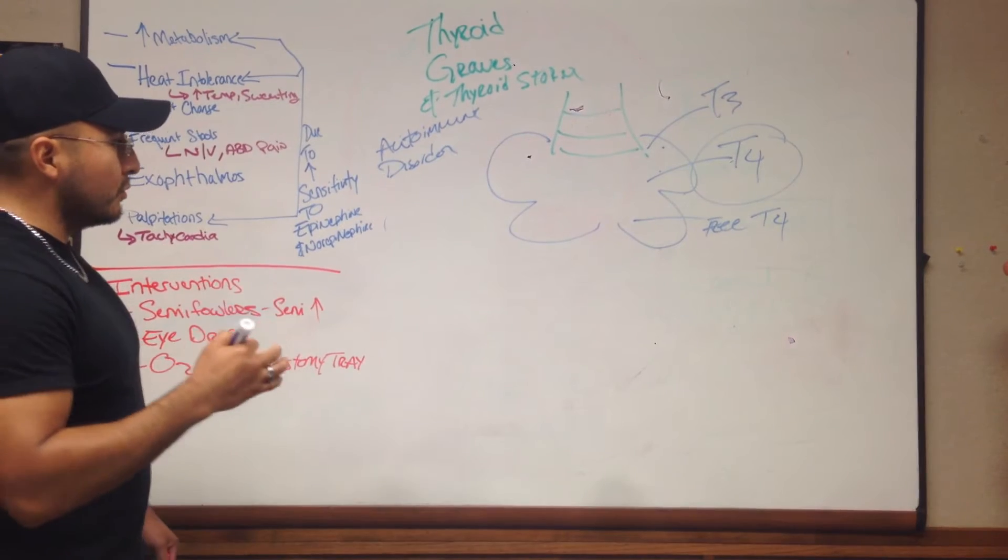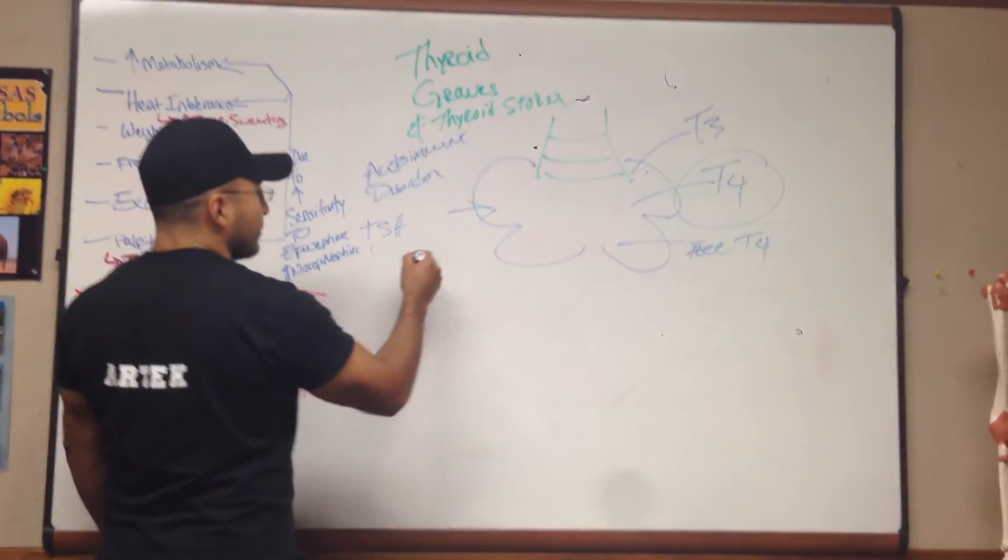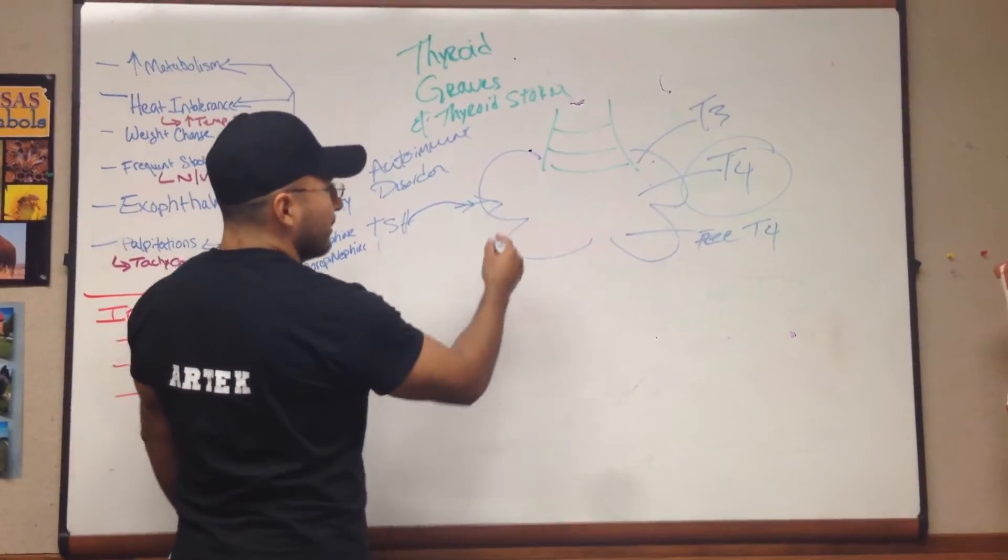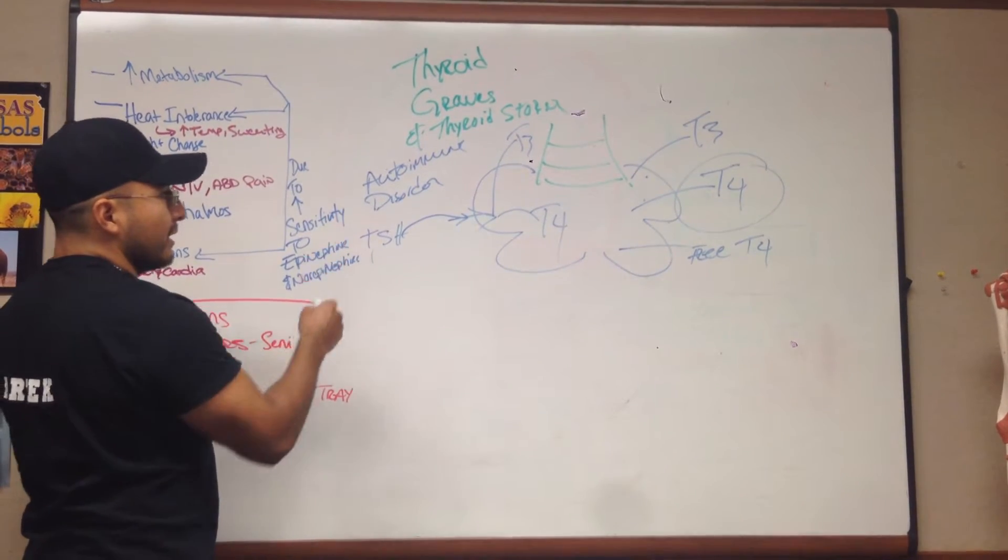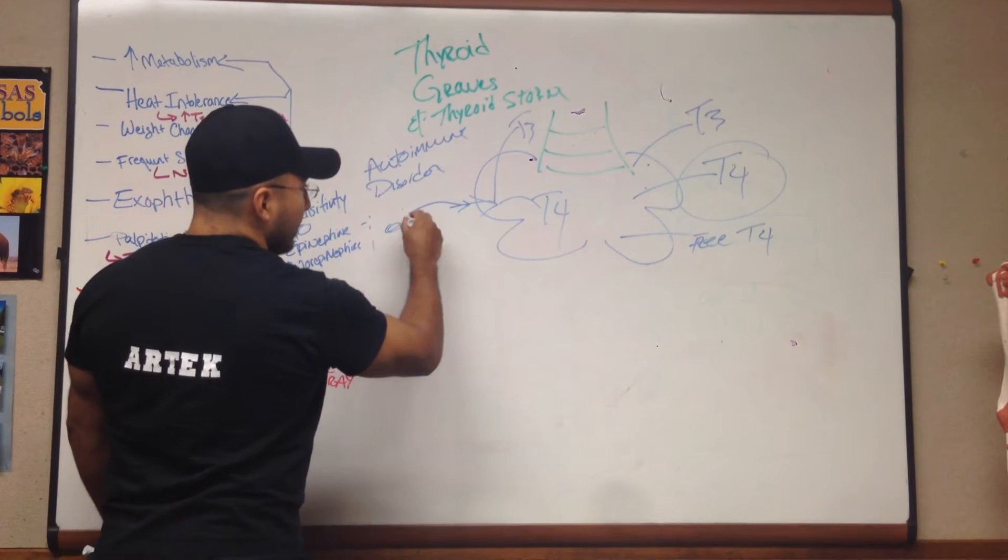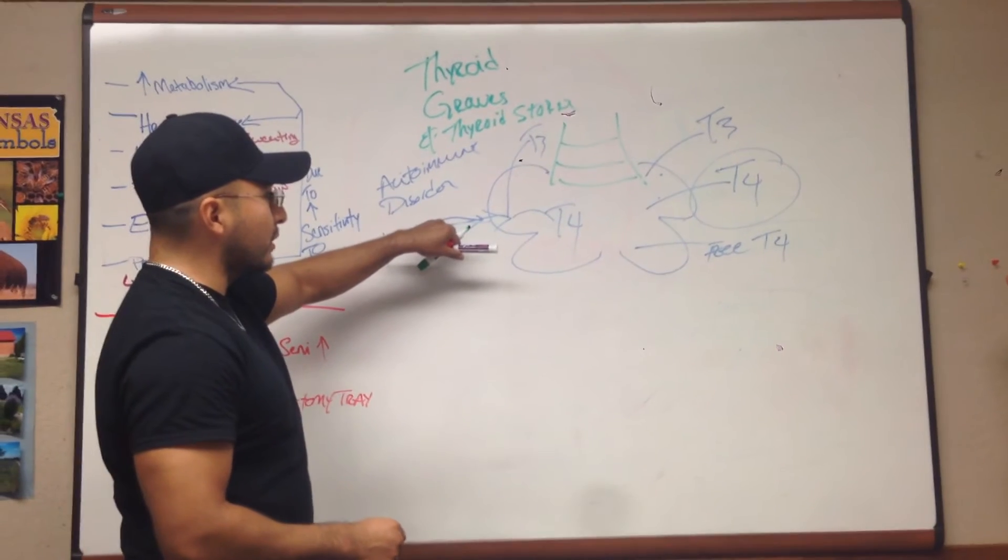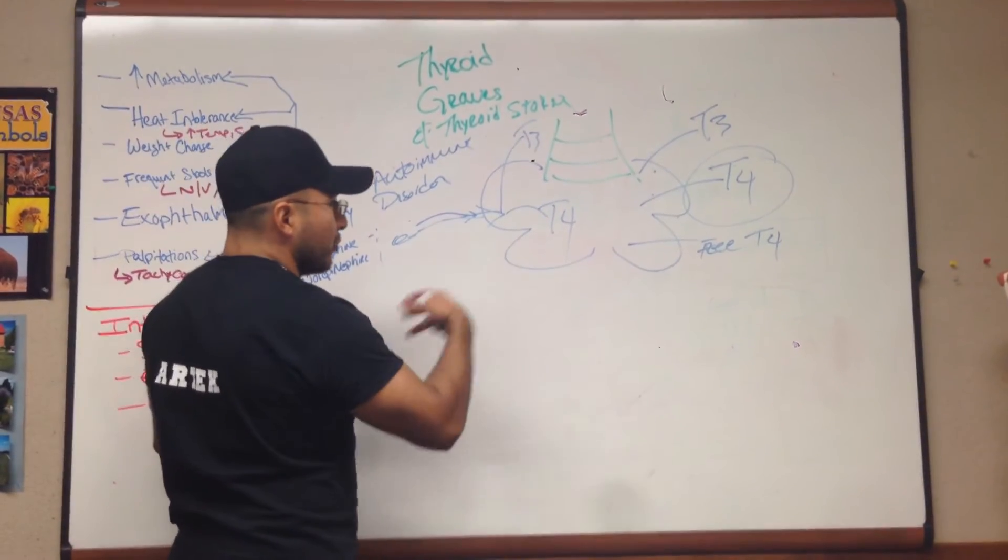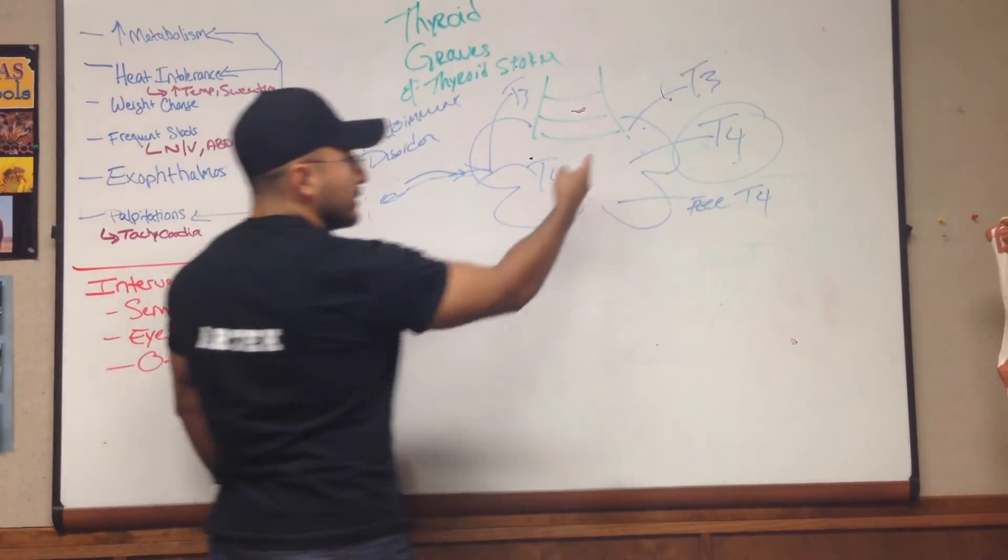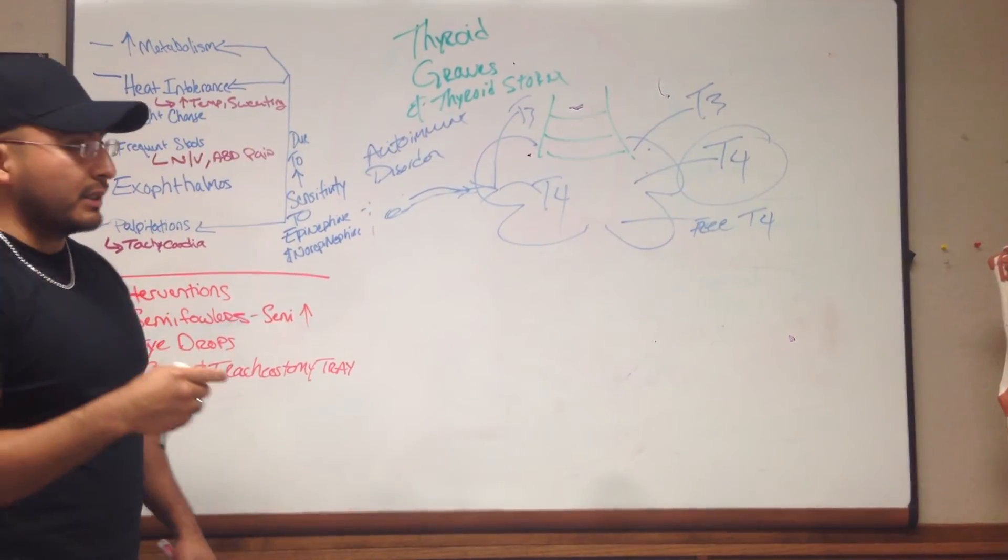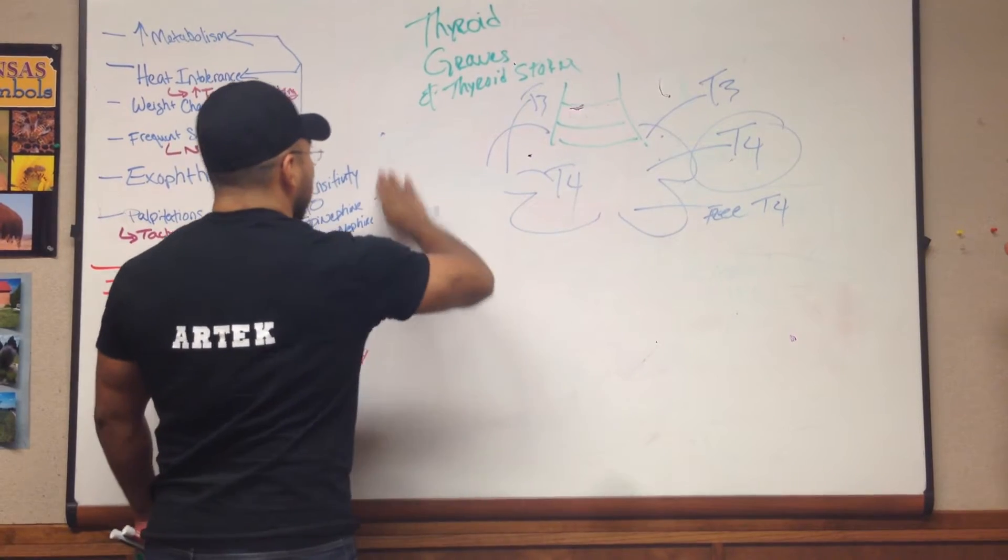Now, what your antibodies do is, there are receptors on here that are supposed to bind to TSH. So, TSH is supposed to come here, sit on here, and it's supposed to make T3 or T4. But, again, this is an autoimmune disorder, so your antibodies come here, and they actually stimulate where TSH is supposed to stimulate. It's an autoimmune disorder. Now, what ends up happening is, these antibodies continuously, or maybe intermittently, attack your thyroid gland. And, therefore, more T3 or T4 is secreted.